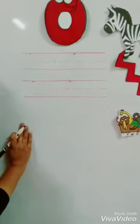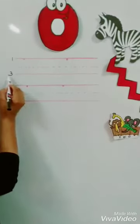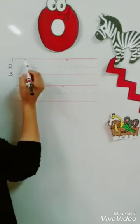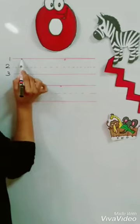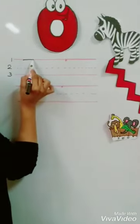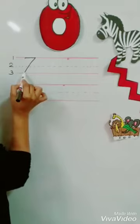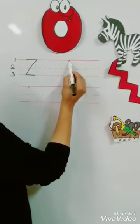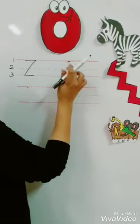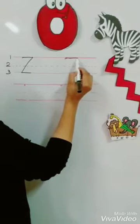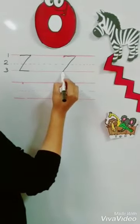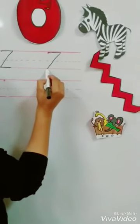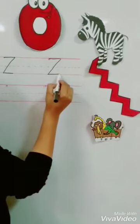We start with the capital z, between line number one and three. Okay. We have here one, two, three lines. We start from here, from the starting dot. Dash on line number one, sloping line down, and dash again. Okay. One more time. From the starting dot, dash on line number one, sloping line down and we move our pencil — dash again.